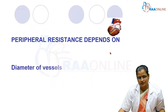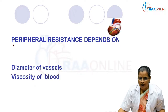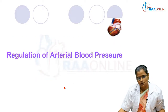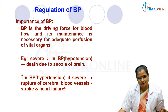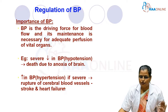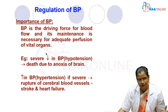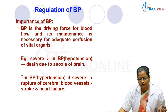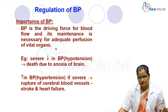Peripheral resistance depends on the diameter of the vessels and the viscosity of blood. Why should blood pressure be regulated? Blood pressure is the driving force for blood flow, and its maintenance is necessary for adequate perfusion of vital organs.